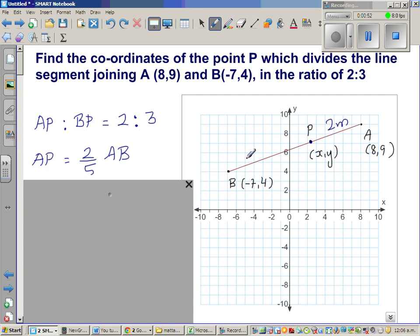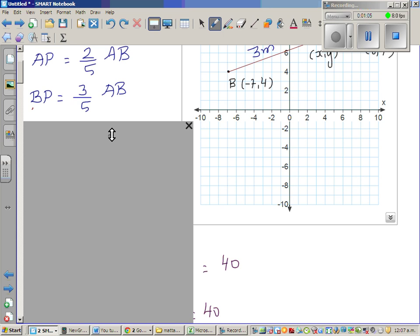If AP is, say, 2M, BP is 3M, and the whole thing is 5M. So AP is 2/5 of AB. Same way you can say BP is 3/5 of AB.